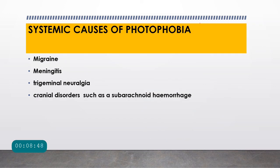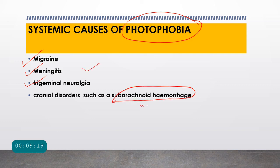What are the systemic causes of photophobia? Apart from local causes, certain systemic conditions can cause nerve irritation leading to discomfort in ambient light. These include migraine — which is associated with aura — meningitis, trigeminal neuralgia, and cranial disorders such as subarachnoid hemorrhage. Meningitis and subarachnoid hemorrhage cause irritation of the basal meninges, and since the optic nerve is enclosed by the meninges, their irritation can produce symptoms of photophobia.